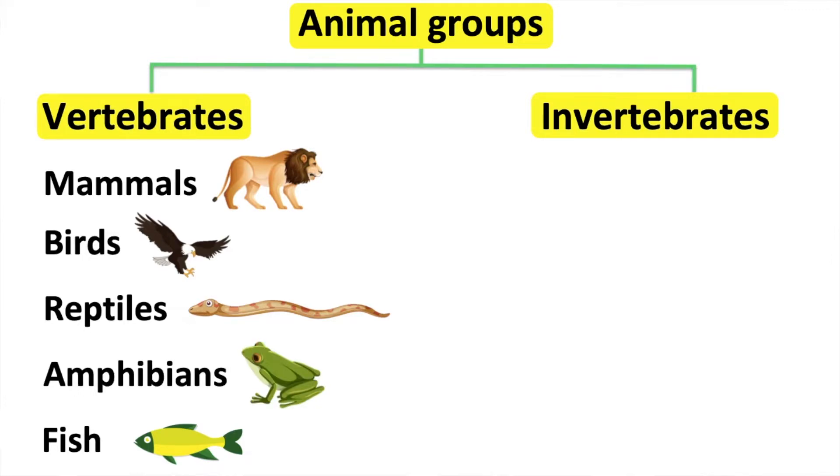Amphibians have damp skin. First, they use their gills to breathe and then lungs. Amphibians lay soft eggs in water and their body temperature changes. Therefore, they are cold-blooded animals. For example, a frog.